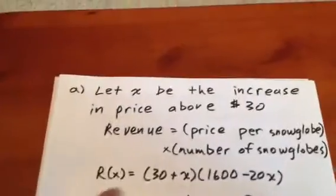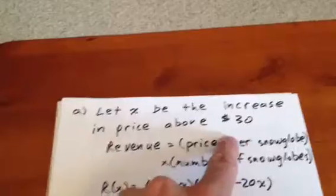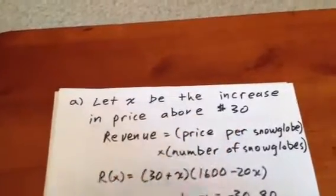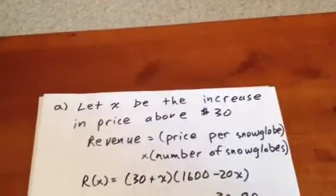Well, this question gives us a baseline price of $30. So we're going to let X be the increase in price above $30, because the increases in the question were in $1 increments.